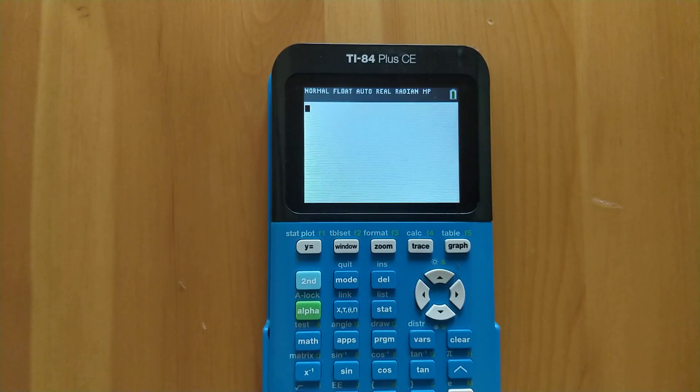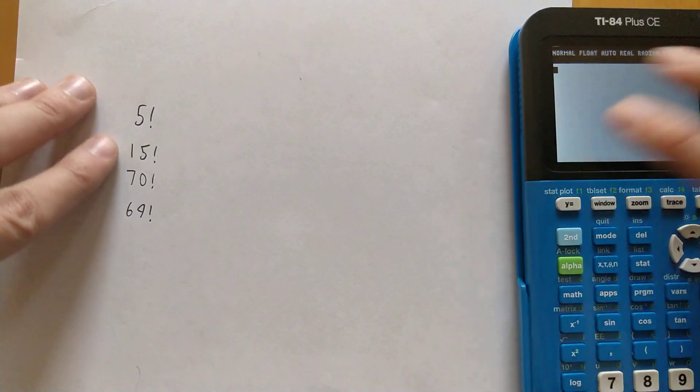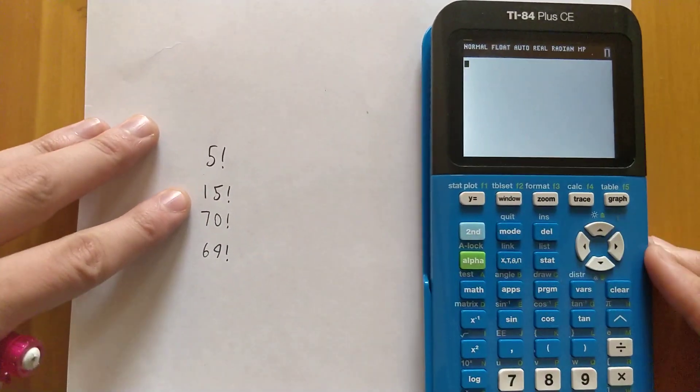Hello everyone, this is just going to be a quick tutorial on how to calculate factorials on the TI-84 Plus CE or any other TI-84 Plus graphing calculator. So I have a few examples here. Let's see if we can find the factorials of these numbers.